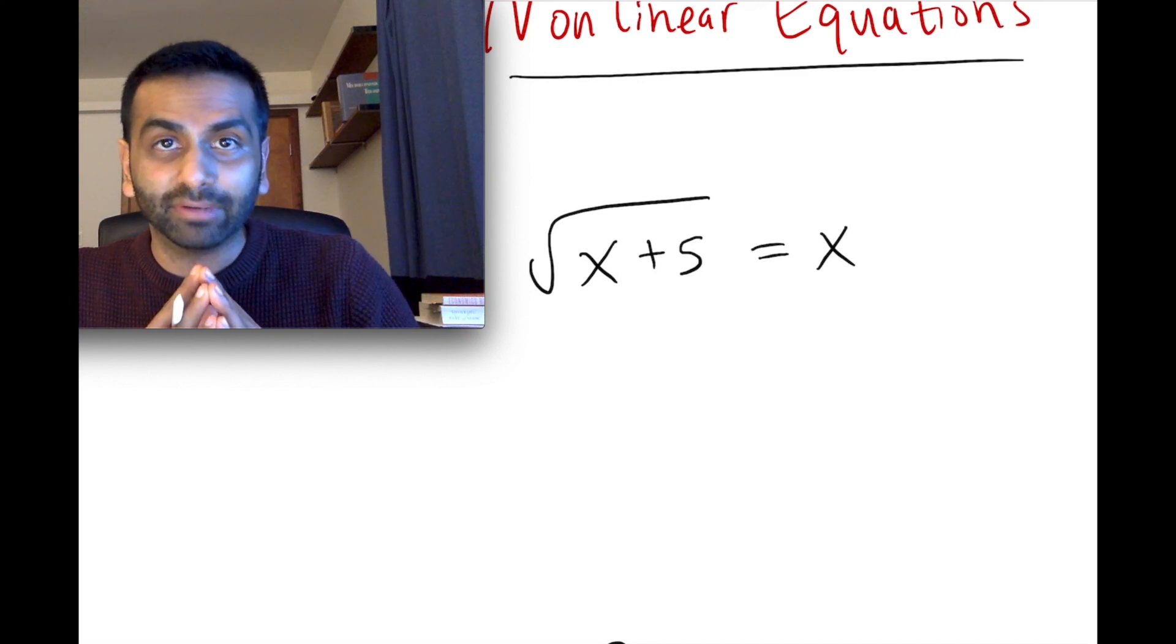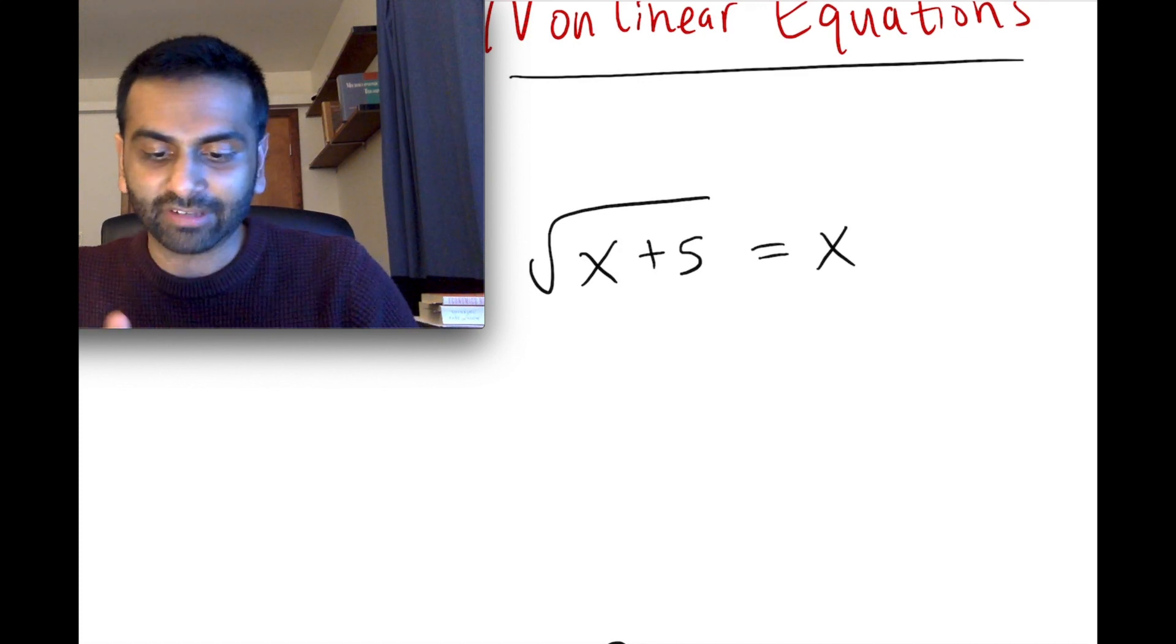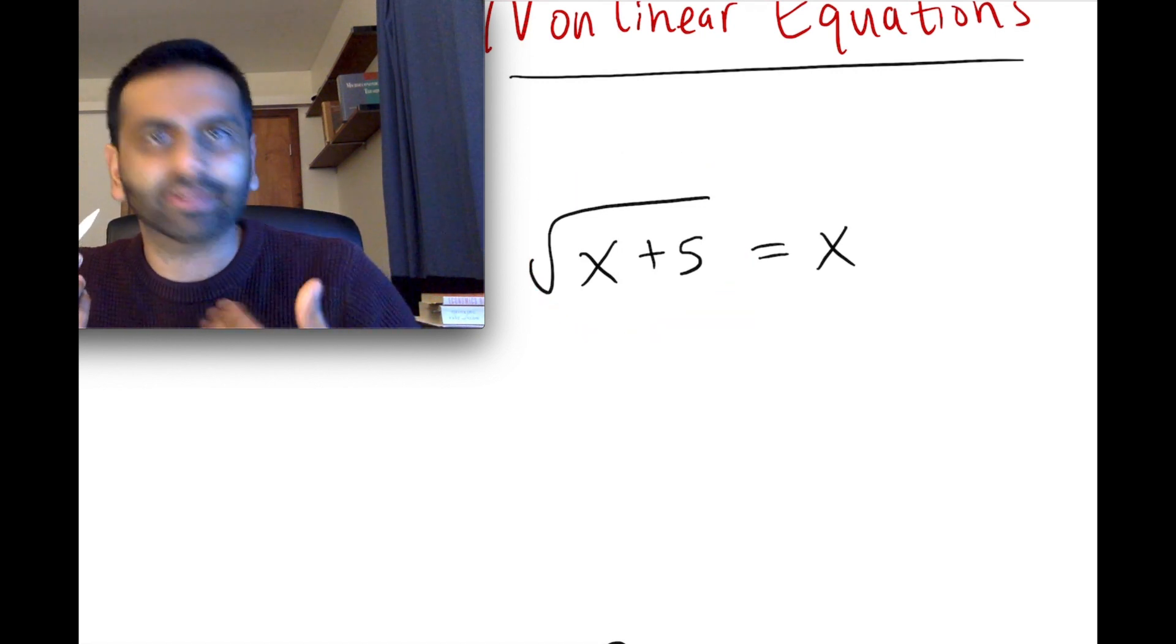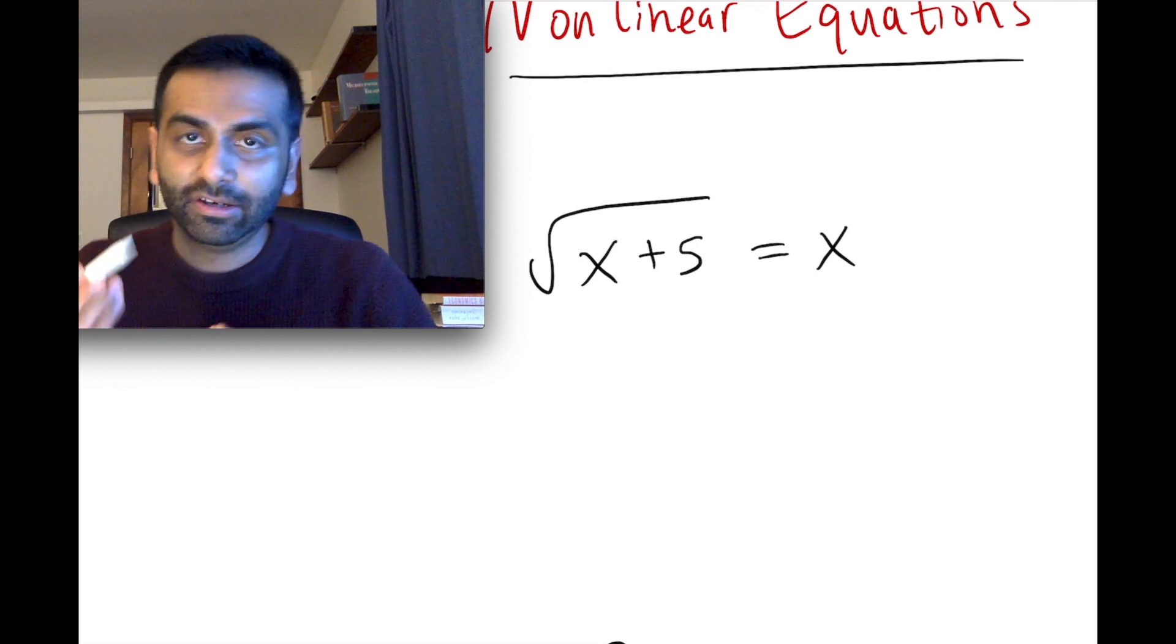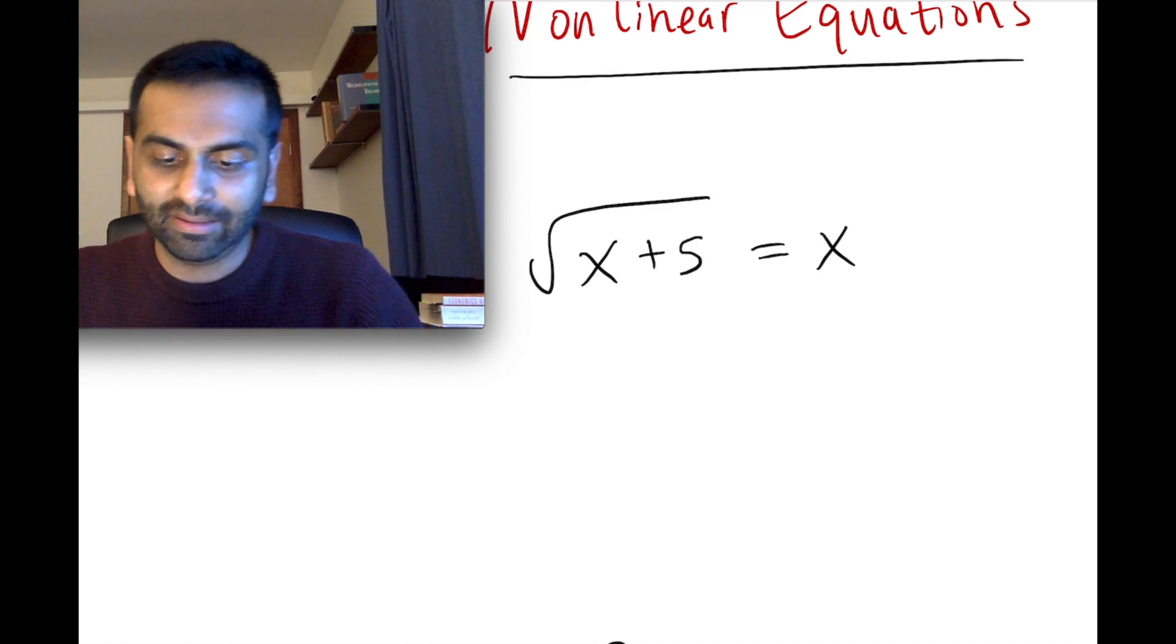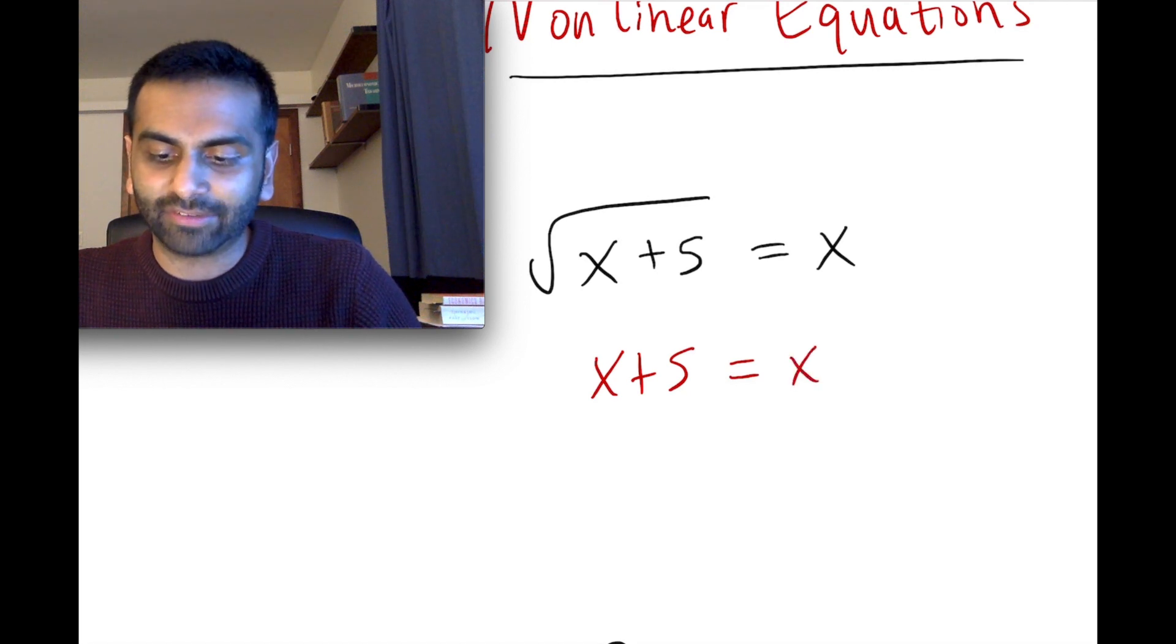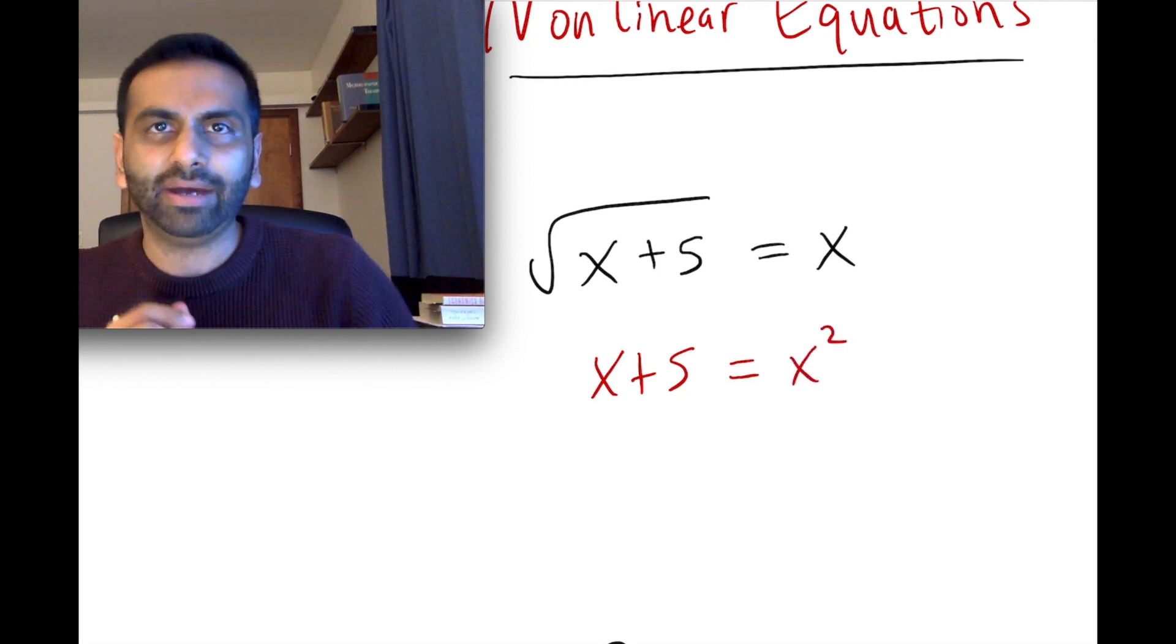But one thing you can do is square both sides just to get rid of the square root. That's always something that should come to mind whenever you see a square root. So if you were to square the left-hand side, that'll just undo the square root. So you just end up with x plus 5 on the left. And on the right, squaring the x just gives you x squared.